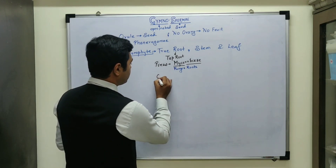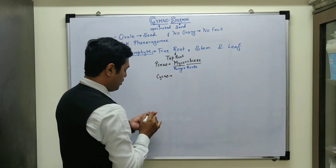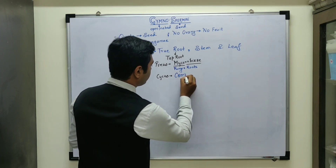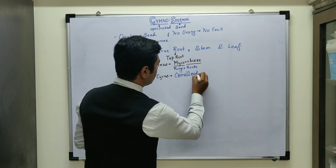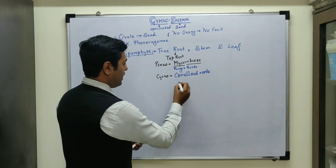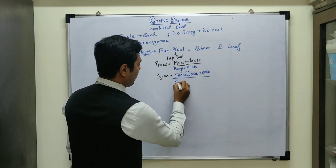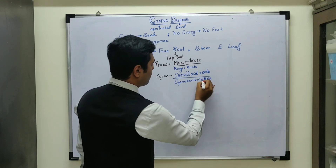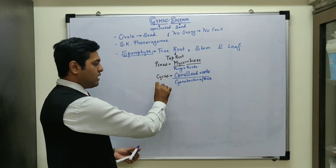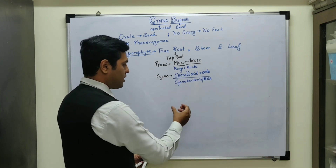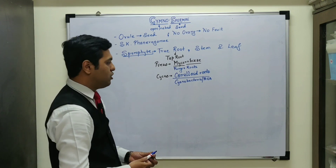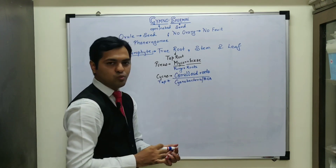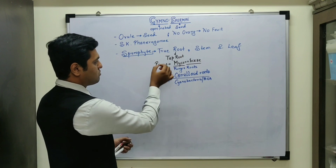In other categories like Cycas, they have roots known as coraloid roots. The reason they are known as coraloid roots is because these roots have a symbiotic association of cyanobacteria, which we also call BGA — blue-green algae. So cyanobacteria or BGA are associated with the roots of Cycas. Cyanobacteria perform nitrogen fixation, thereby increasing the fertility of the soil. So Cycas has both tap roots and coraloid roots.